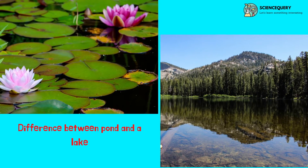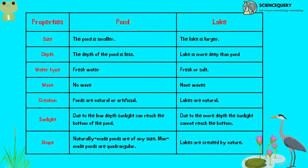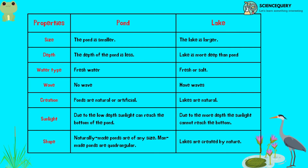Now let's see some of the major differences between pond and a lake. The pond is smaller in size whereas the lake is larger in size. The depth of the pond is less; the lake is deeper than the pond. Pond is made up of fresh water whereas lakes are made up of either fresh water or salt water. There are no waves in a pond whereas lakes have waves. Ponds are natural or artificial in origin; lakes are natural. Due to the low depth, sunlight can reach the bottom of a pond. Due to greater depth, sunlight cannot reach the bottom of a lake. Man-made ponds are quadrangular, while lakes can be of any size.